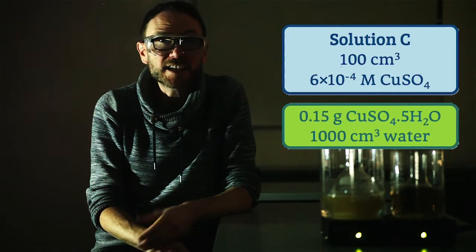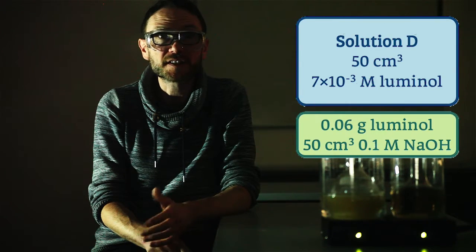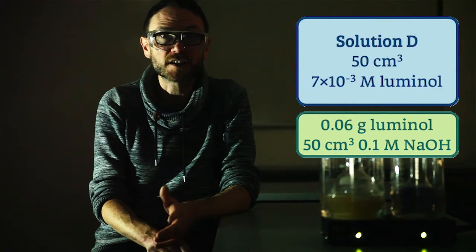The final solution D is your alkaline luminol mix, made by dissolving 0.06 grams in 50 cm³ of 0.1 molar sodium hydroxide.